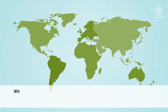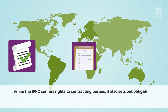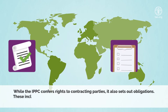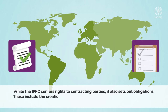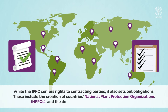While the International Plant Protection Convention confers rights to contracting parties, it also sets out obligations. These include the creation of countries' national plant protection organizations and the designation of official International Plant Protection Convention contact points.